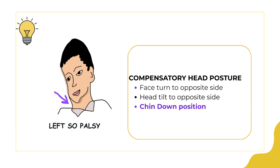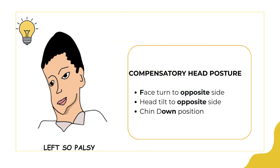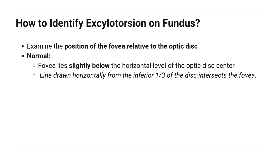The third component is the chin down posture. In the chin down position, the eyes move upwards, meaning the eyes are not in depression — which is the position where the superior oblique is most needed. By avoiding down gaze, the chin down posture reduces both vertical and torsional diplopia. To summarize, the compensatory head posture in fourth nerve palsy places the eye in a position with minimal need for depression, adduction, and intorsion — keeping the eye where the superior oblique is least required. This is why patients adopt this characteristic abnormal head posture.